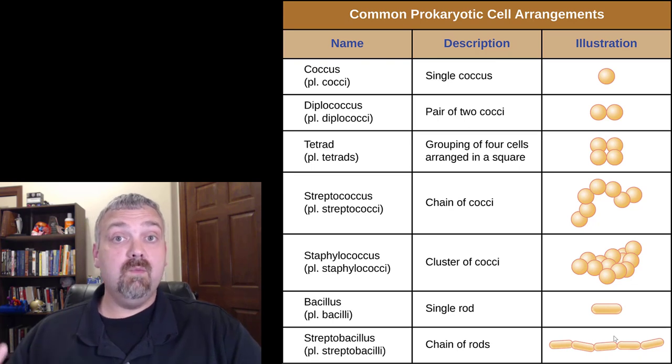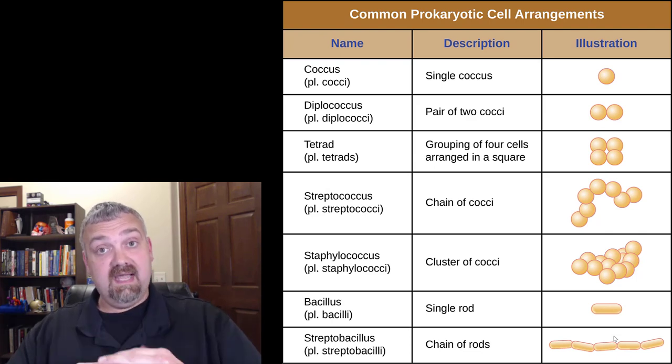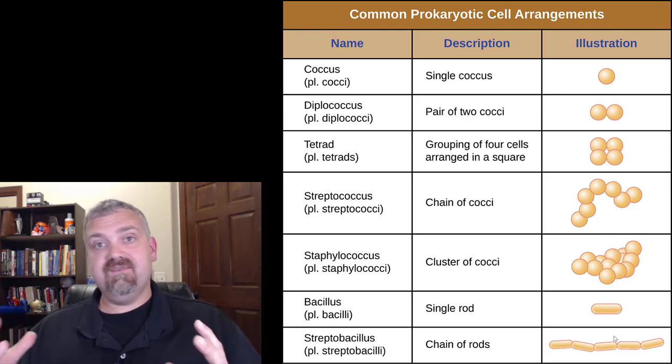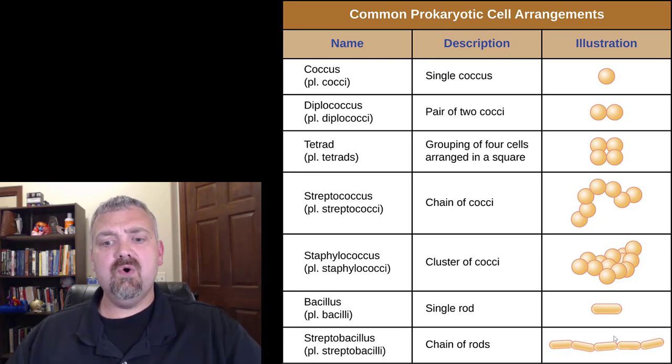A streptobacillus is a chain of rods, but rods don't actually grow in clusters. That's because rods grow end to end. They don't grow side to side. So if you see a cluster of rods, it's only because they're in a pile. It's not because they grew that way. So there is no staphylobacillus.